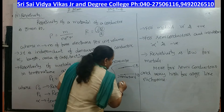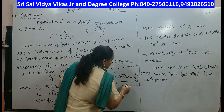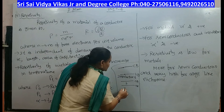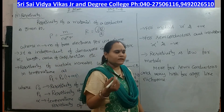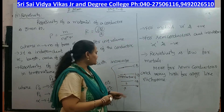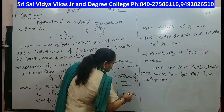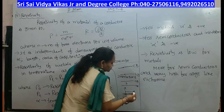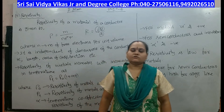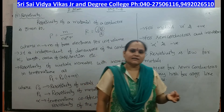In semiconductor materials, the distance between the valency band and conduction band is small compared to insulators. By giving a small amount of energy to the electrons, they reach the conduction band. This is why semiconducting materials like silicon and germanium are used in electronic devices.